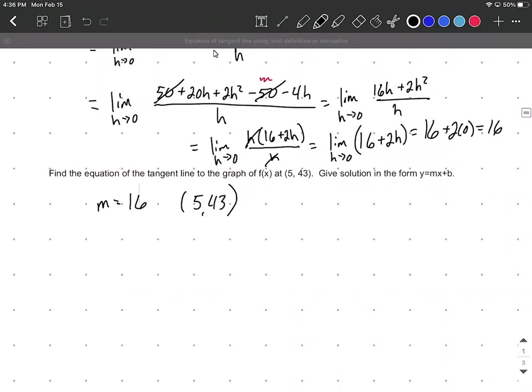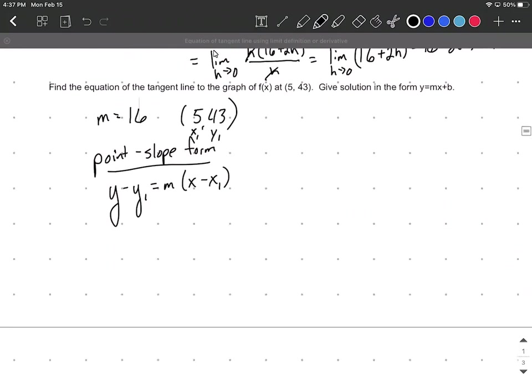We could use y = mx + b form or the point-slope form: y - y₁ = m(x - x₁). With m = 16, x₁ = 5, y₁ = 43, we get y - 43 = 16(x - 5).